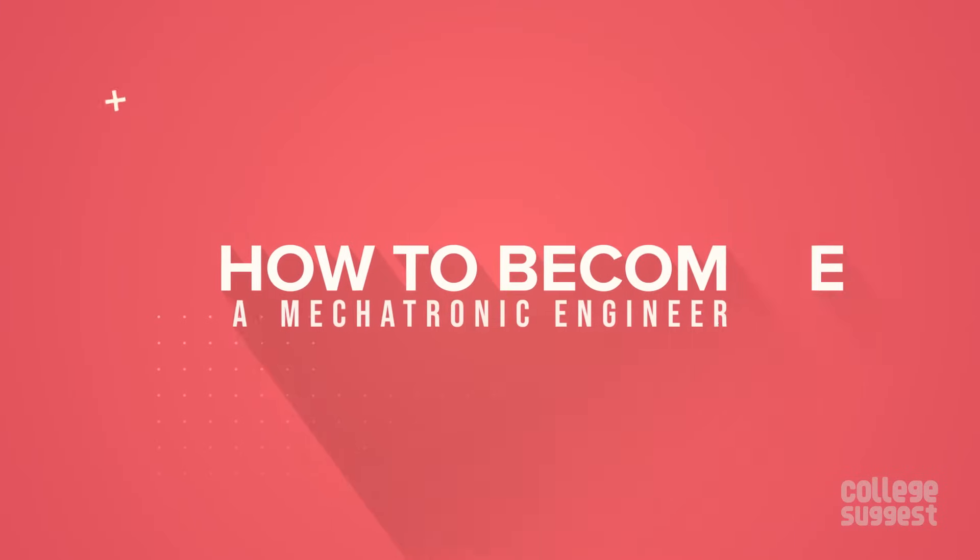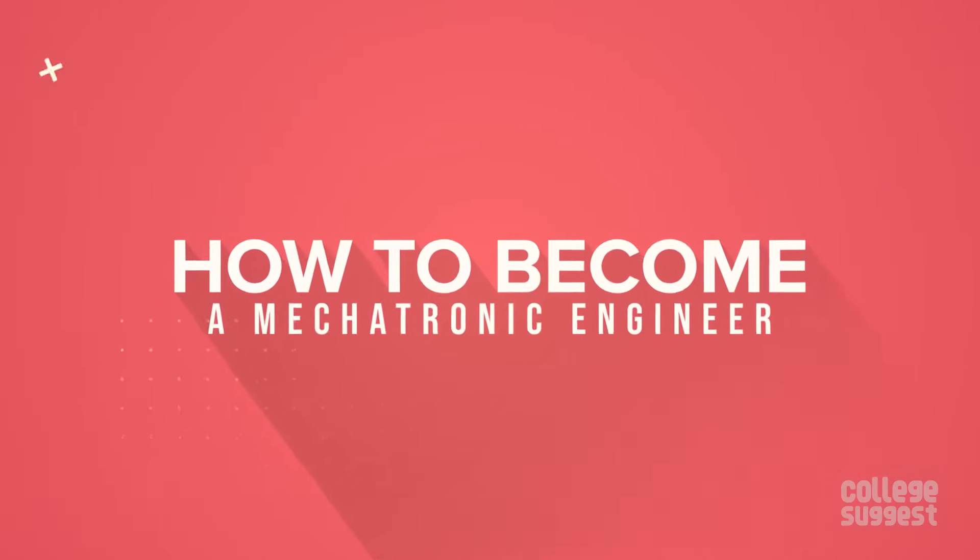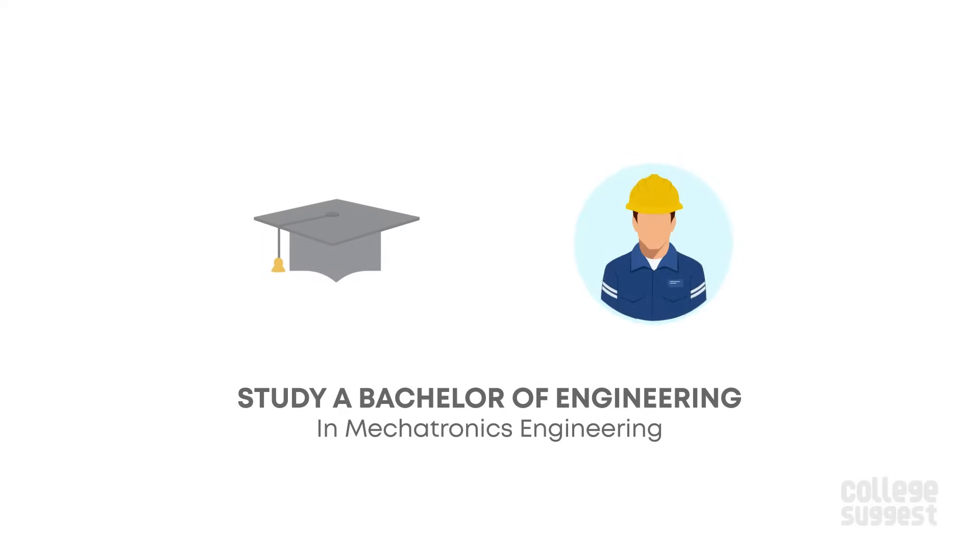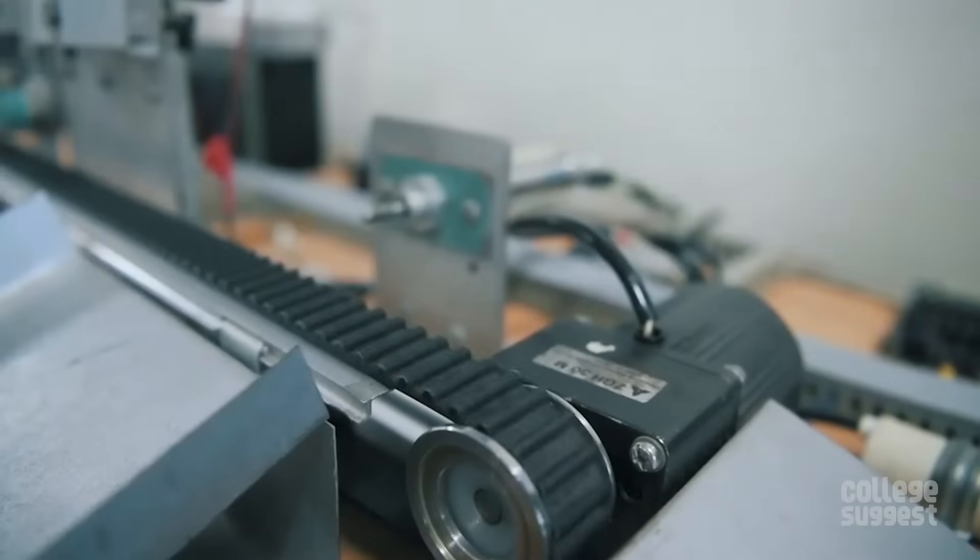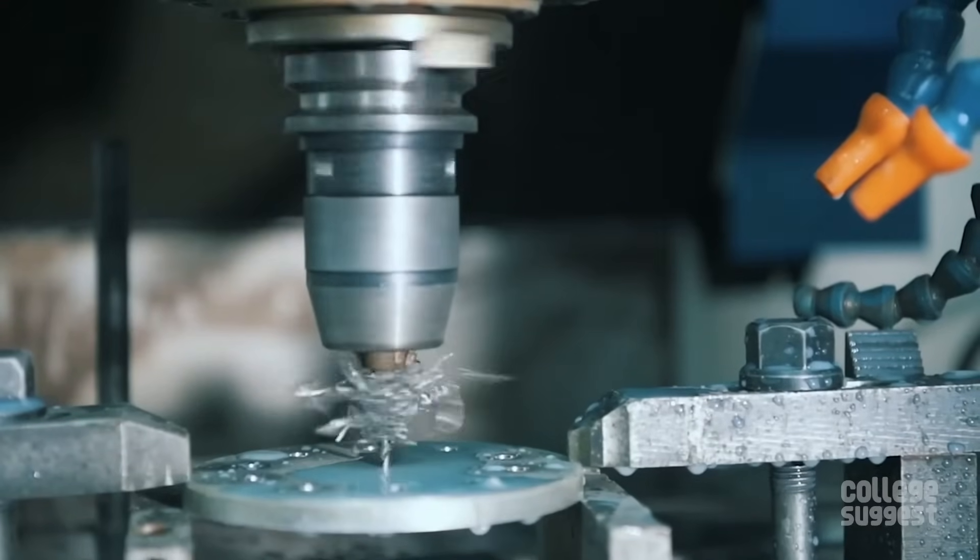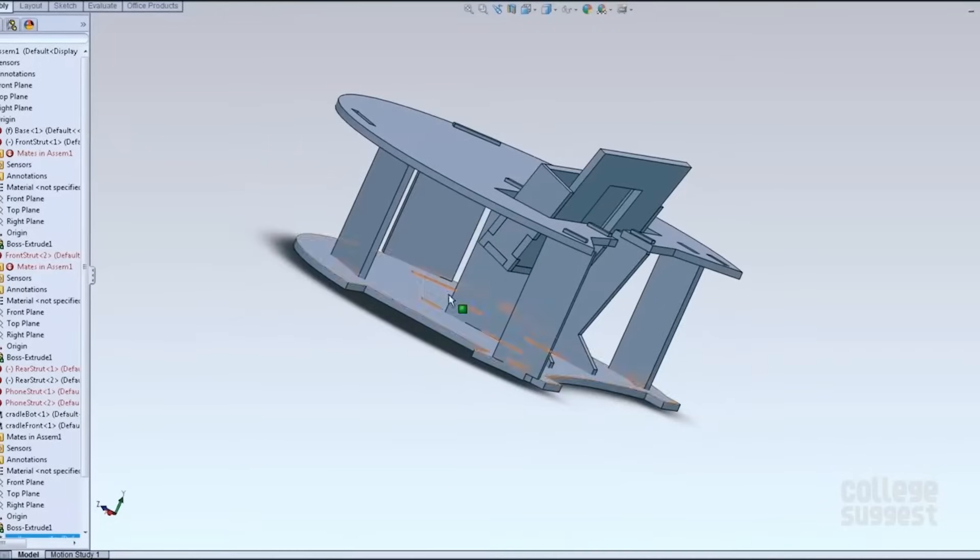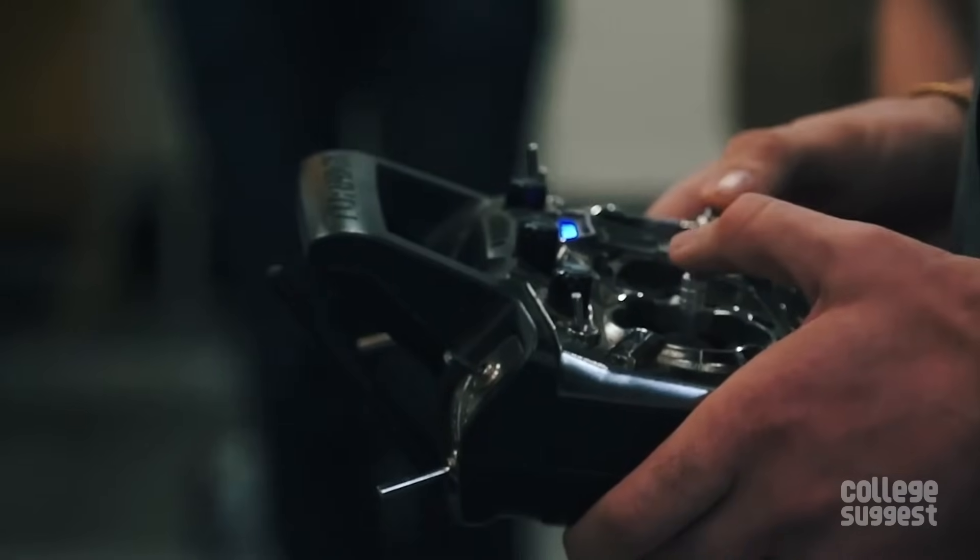So how do you become a mechatronic engineer? The best way is to study a bachelor's of engineering in mechatronics engineering. It is a four-year undergraduate multidisciplinary study of the engineering field. Instead of the conventional divisions of engineering, it joins mechatronics engineering, mechanical engineering, computer engineering and control engineering subjects all in one course.